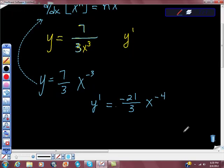Well, hopefully, we can look at this and say that negative 21 over 3 is negative 7. And x to the negative fourth is 1 over x to the fourth. And here we have our derivative. Alright, let me grab one more real quick for you.